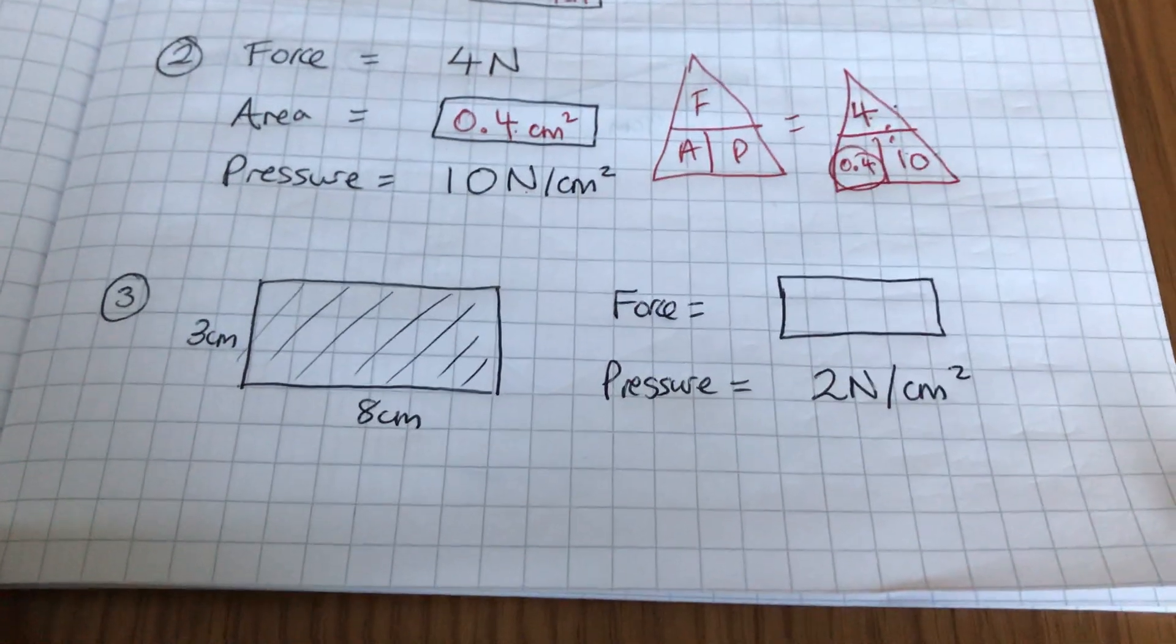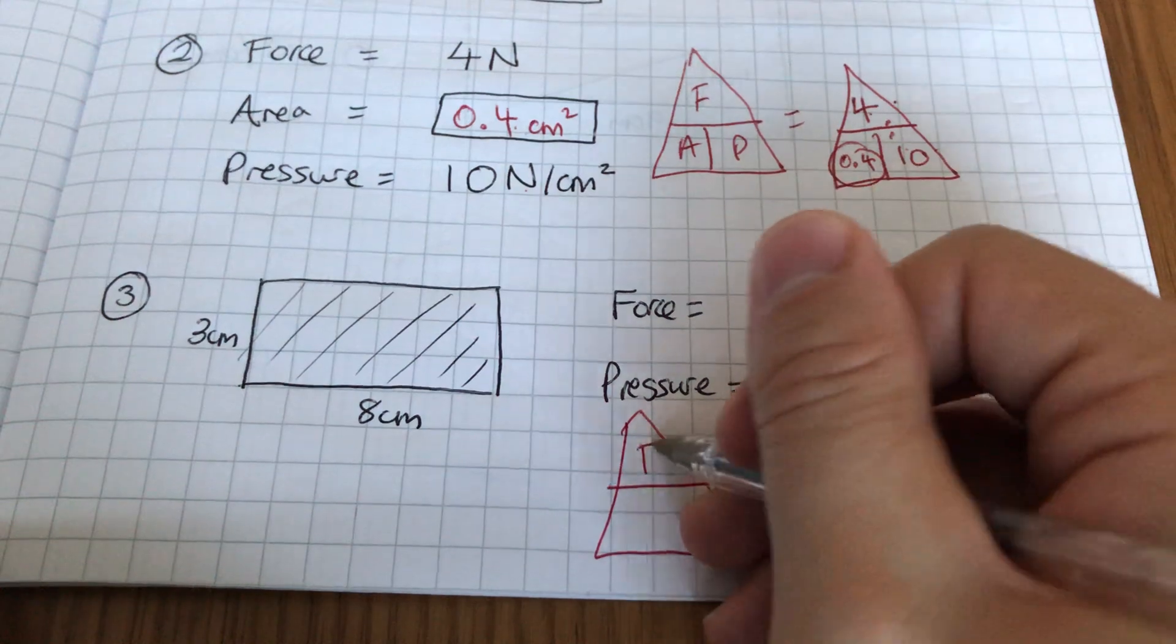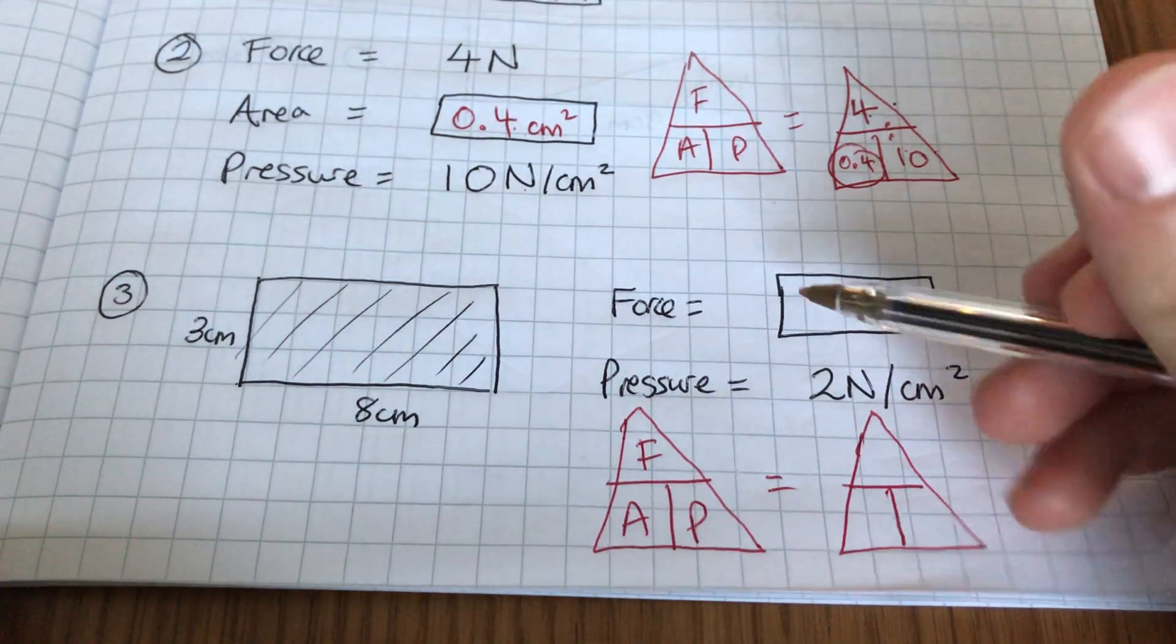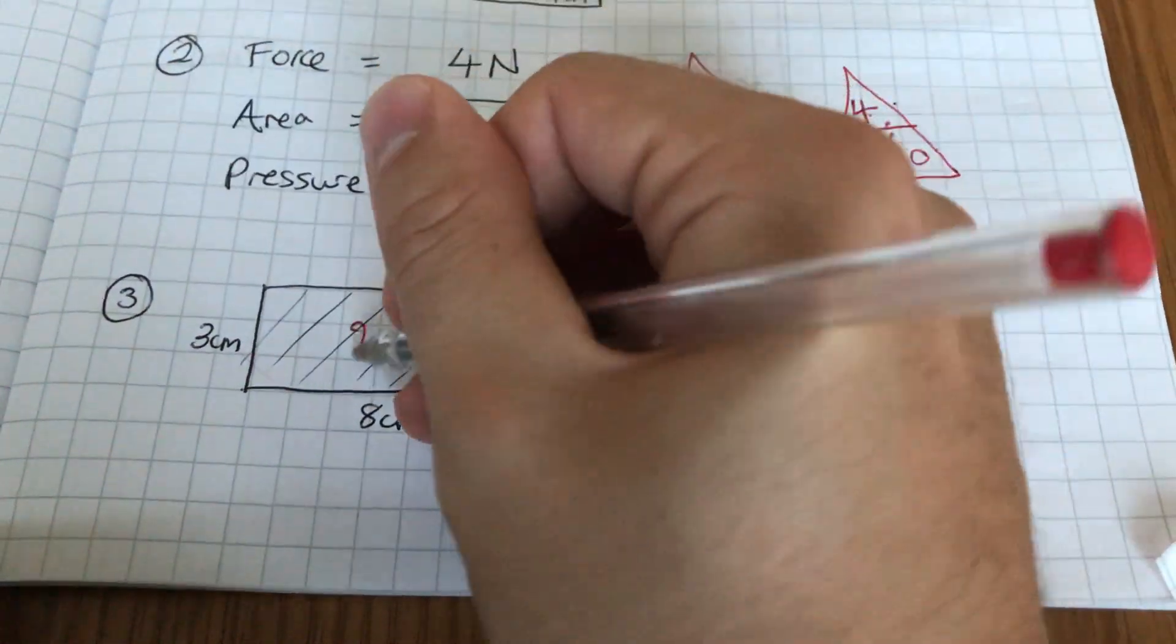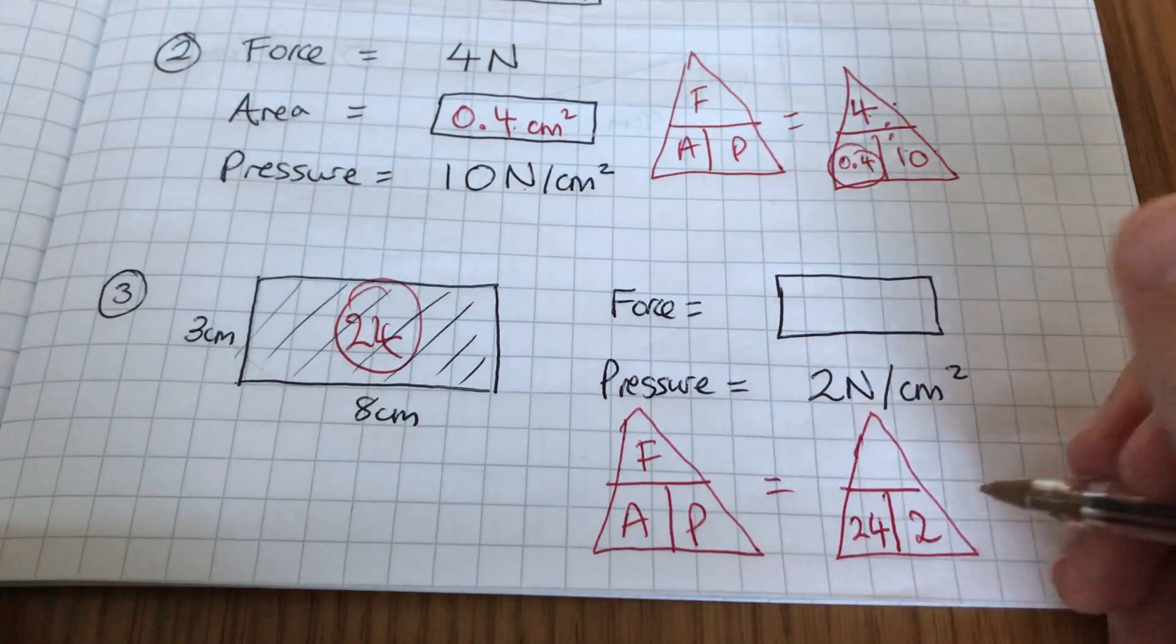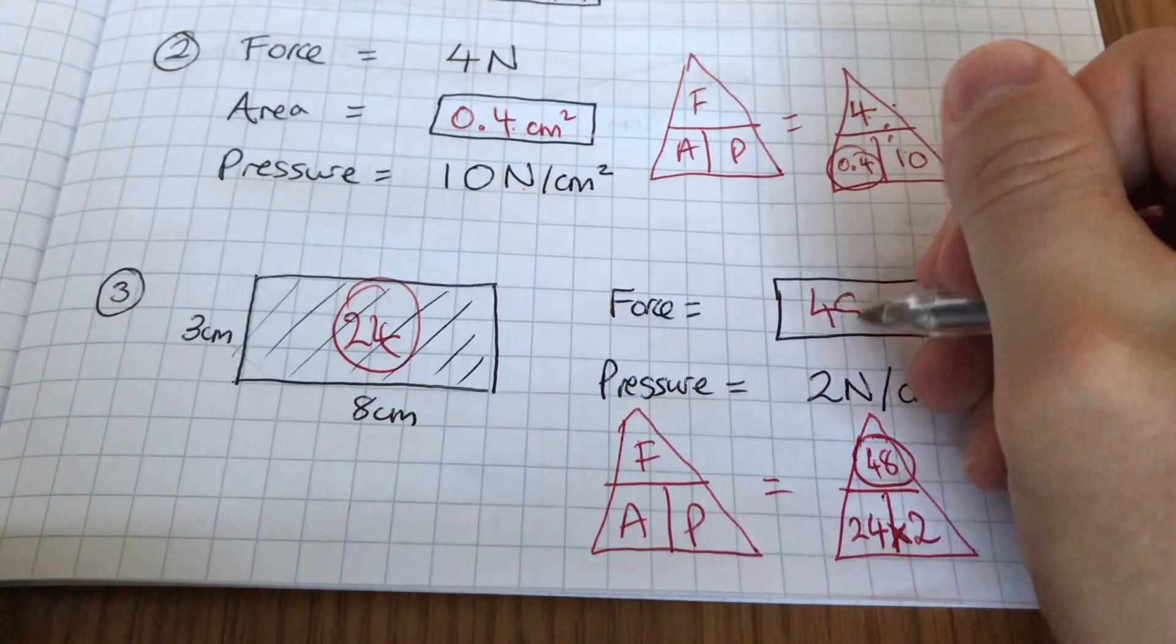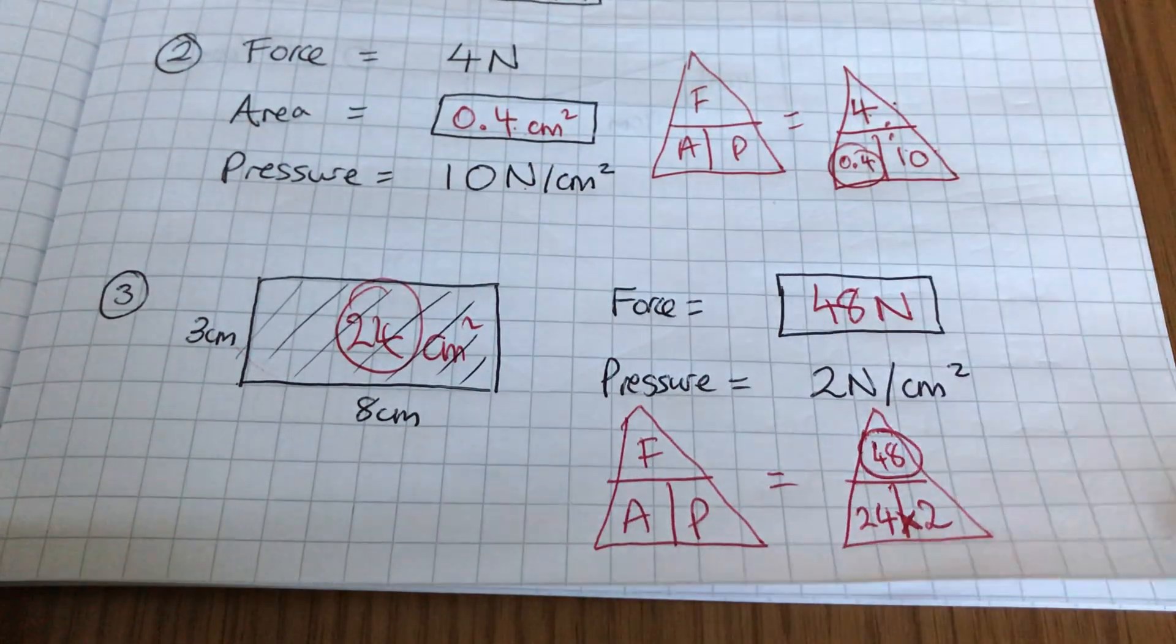This time we know it's to do with force, area, pressure, so we're drawing this in to remind us. We're going to turn that into this. And I know the area, well I need to work out the area, which is 3 by 8, so I know that's 24, so there we go, 24. I've got the pressure which is 2, and I don't have the top one, which means I'm going to times these two together. And of course that gives me 24 times 2 is 48, so my answer is 48. I've got centimeters squared, I've got newtons per centimeter squared, but I don't have newtons on its own, so there it is.